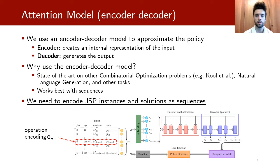We use the encoder-decoder model because of its successful applications in audio processing, natural language generation, and other combinatorial optimization problems. This type of model works best with sequences, so we need to encode the instance of the JSP and its solution as a particular type of sequence.